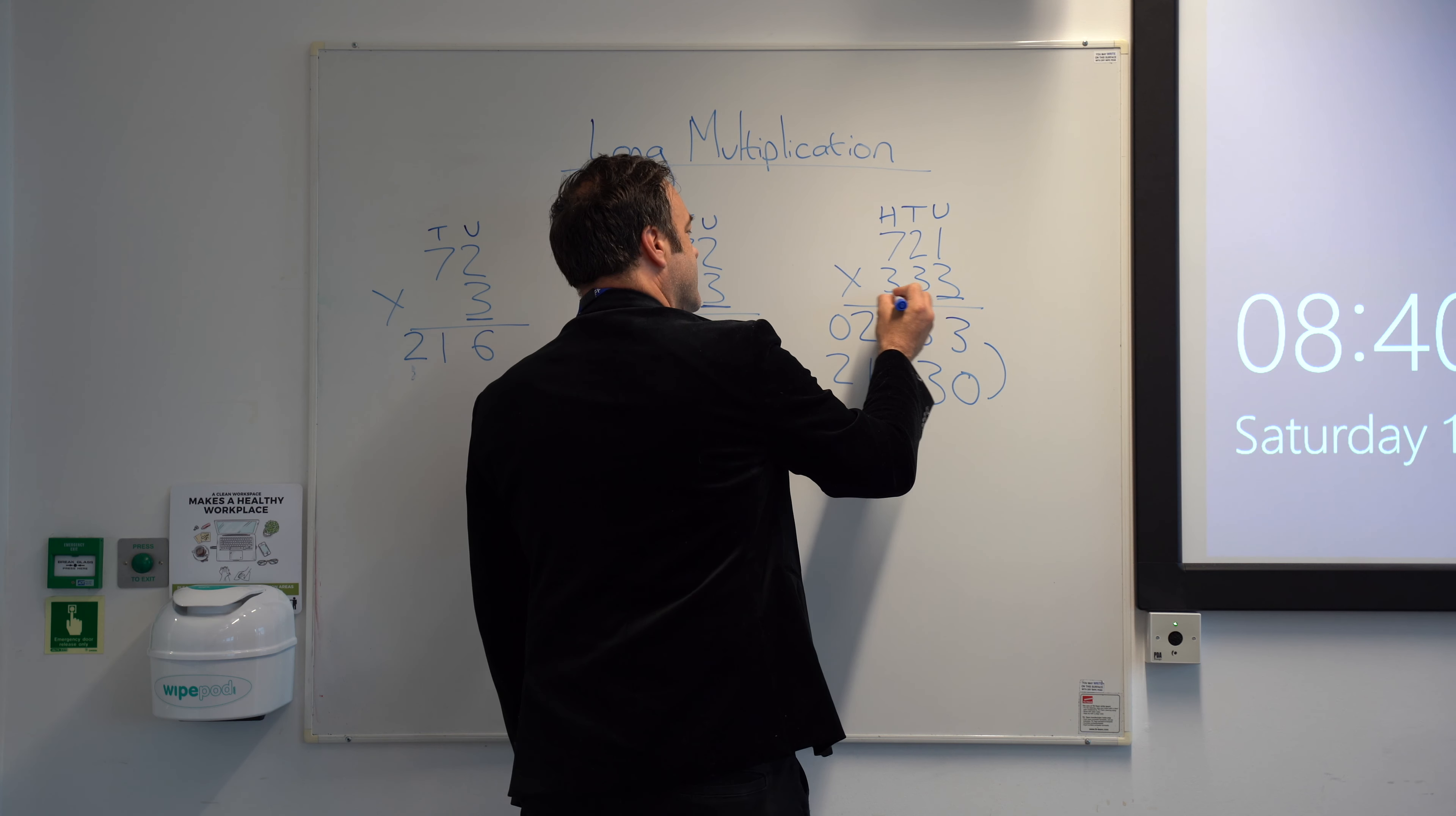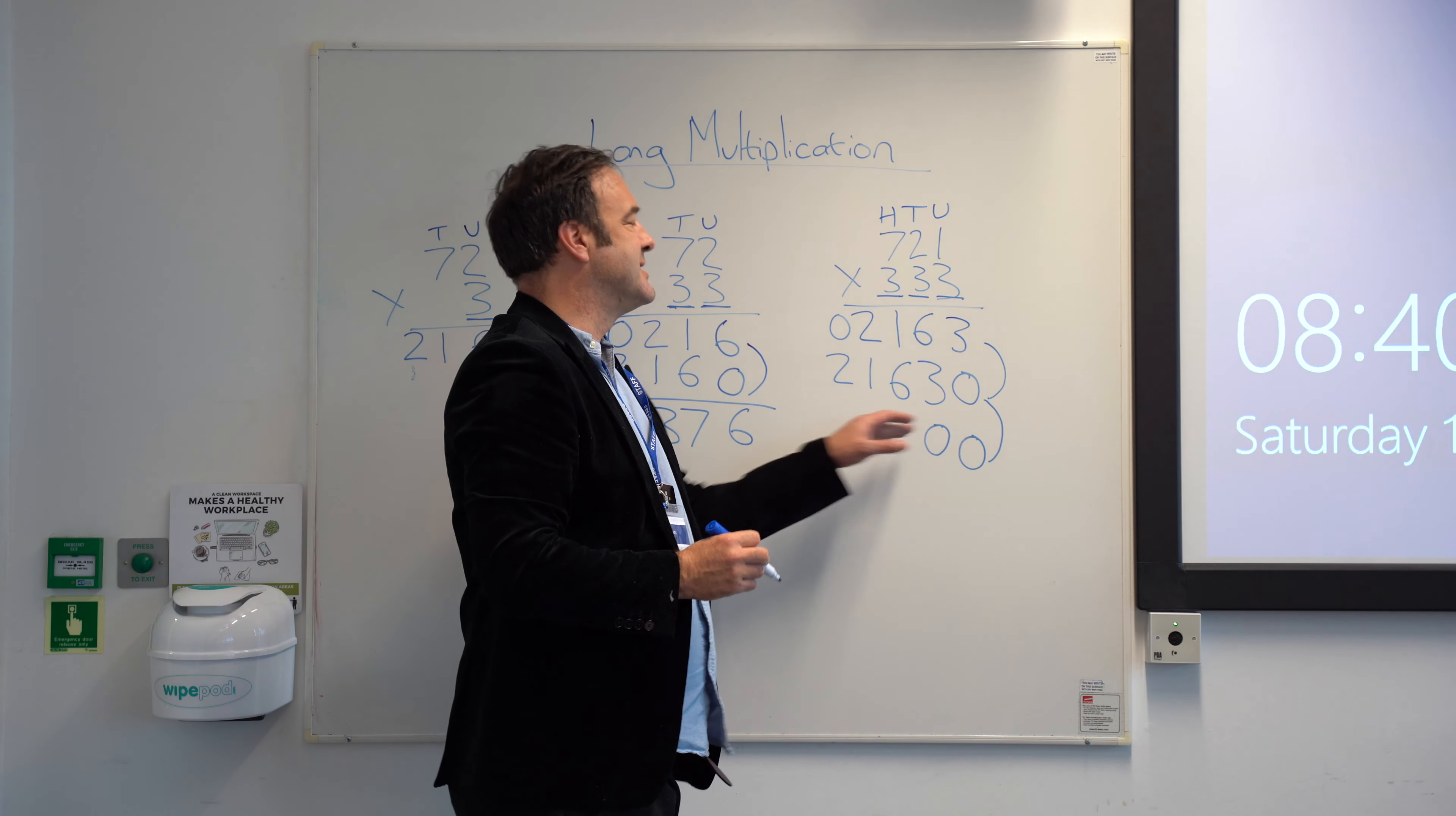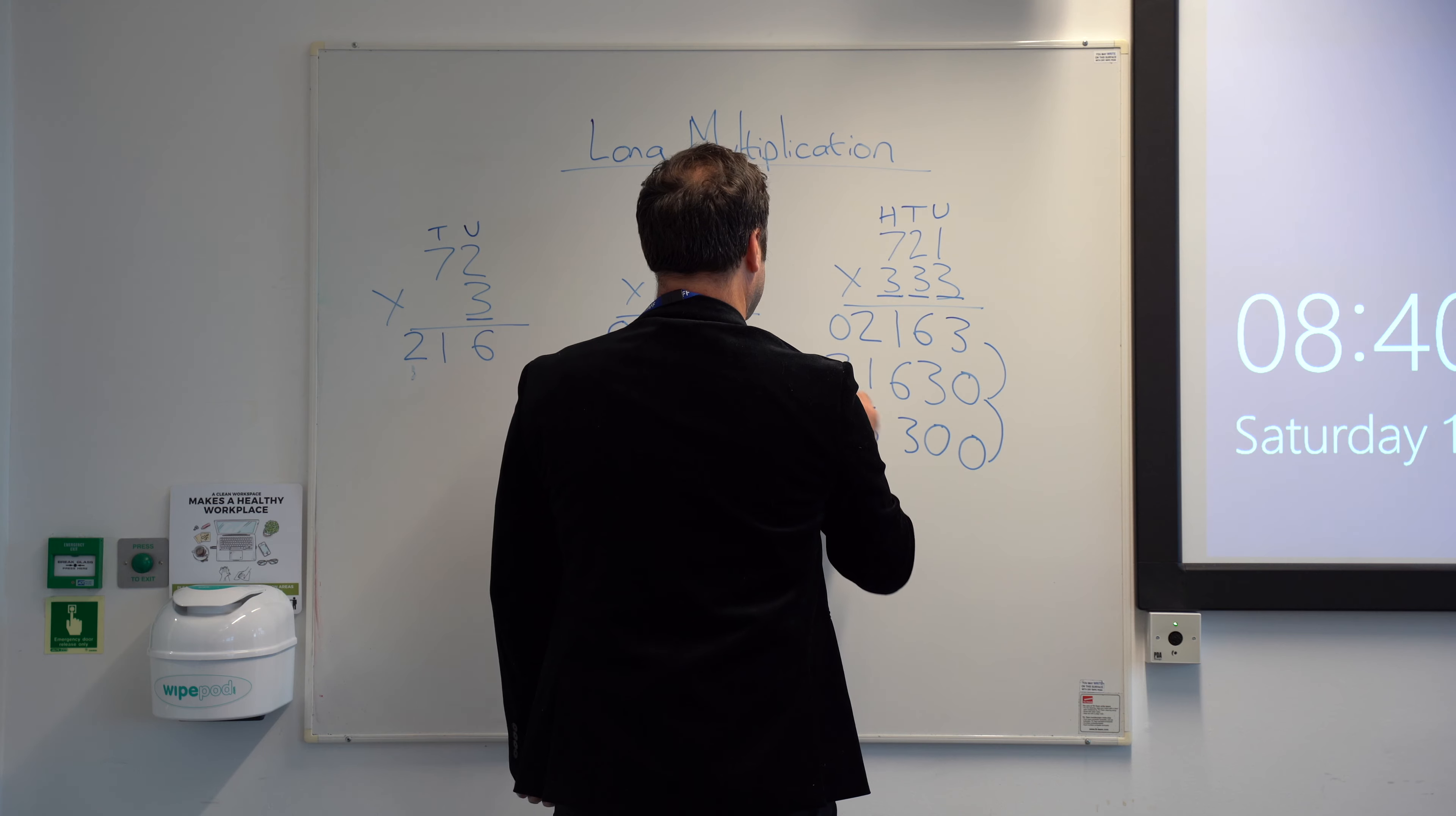But now we're going to multiply by the hundreds. So we go down the row again. This time we're stepping out to the hundreds here, so we put zero, zero. That's really important. This is the bit that most kids forget to do. Most kids forget to step out to the correct position. So 3 times 1 is 3, 3 times 2 is 6, 3 times 7 is 21.